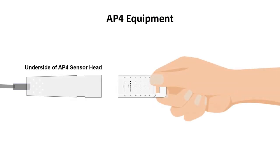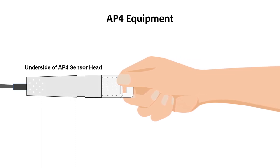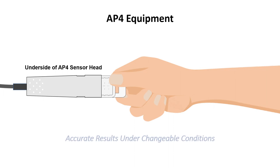The AP4 system also includes a calibration reference plate which inserts into the sensor head. This enables rapid six-point field calibration, ensuring consistent and accurate results under changeable conditions.